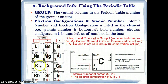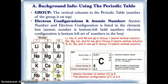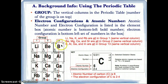For example, Li, Na, K, and Rb are all in group 1 because they're in the same vertical column with the number 1 on top. Be, Mg, Ca, and Sr are all in group 2 because they are in the same vertical column with the number 2 on top. And next we have B, Al, Ga, and In, and they're all in group 13 with the number 13 on top. So they're in the same group 13 because they're in the same vertical column.